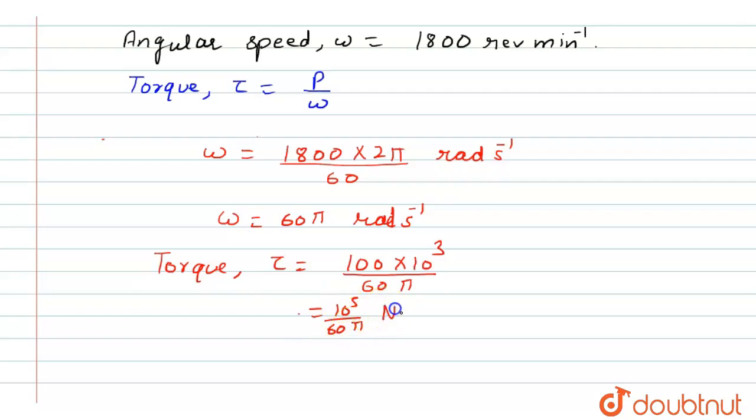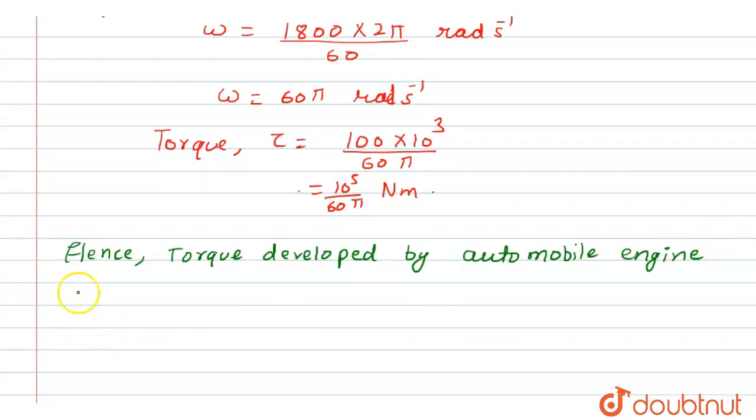So this is the torque produced or developed by the engine. We can write the final answer here. Hence, torque developed by automobile engine is 10 raised to the power 5 divided by 60π newton meter. So this is the answer of this question. I hope you understood the explanation. Thank you.